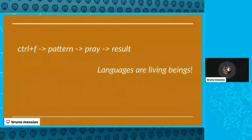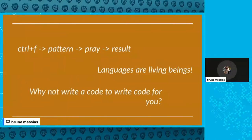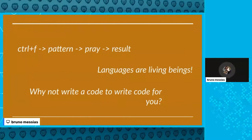Wittgenstein's statement brings a philosophical meaning for language — he started to think about language as a living being. We can bring that to computer science and think: should our codebase be a living being? This leads to the question: why can't we write code to write code for us? When we answer this affirmatively, we are entering the realm of metaprogramming, which will be one of the topics of this presentation about gambiarras.